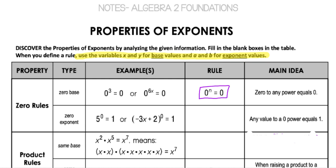The other situation is if zero is in the exponent. The rule there is that any value to a zero power is one. So x — whatever the base is — to the zero power is always going to equal one.